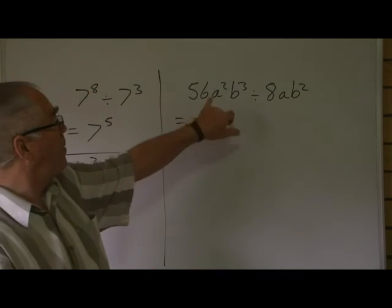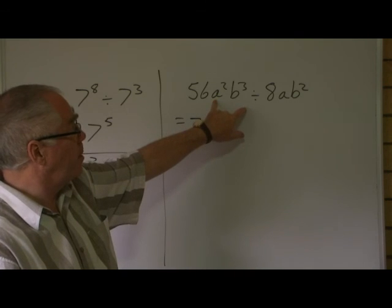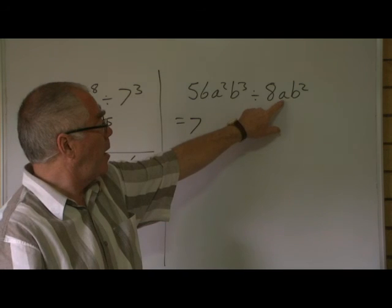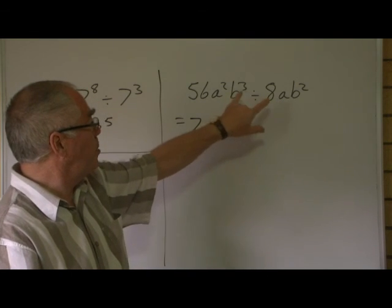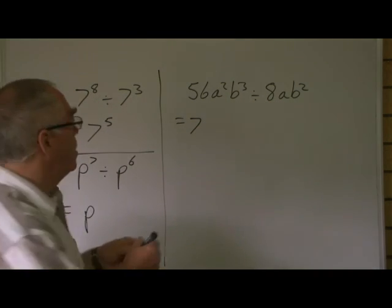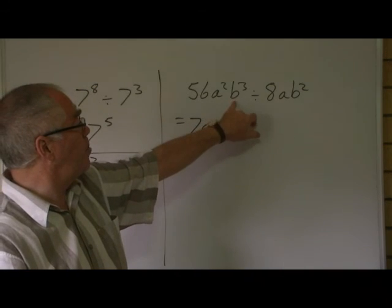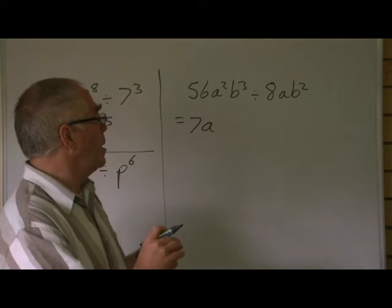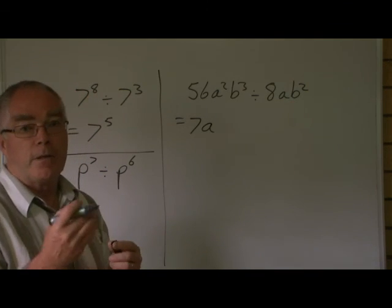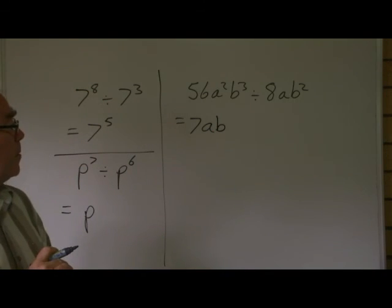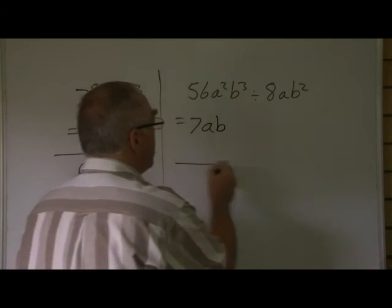So here we have a to the power of 2, a to the power of 1. 2 take 1 is 1, so we just have a. Then we've got b cubed divided by b squared, so that's b to the power of 3 take 2, which is 1. So the answer is 7ab.